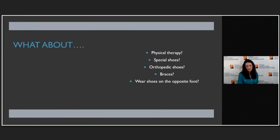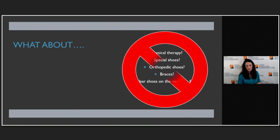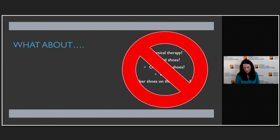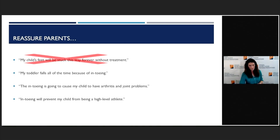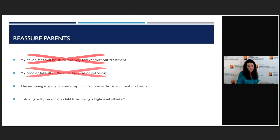Parents are always asking: can we do physical therapy, special shoes, orthopedic shoes, braces? We even have kids come in where the parents have been putting the left shoe on the right foot and vice versa for a year. But really none of that stuff works. Our job is basically to reassure parents: they're not going to be stuck that way forever, they're going to get better. There's never been any association between in-toeing and frequent trips and falls — those are usually just because kids are still learning to walk and run. There's also never been any association between in-toeing and long-term arthritis or joint problems, and in-toeing is definitely not going to be an issue with athletics going forward.